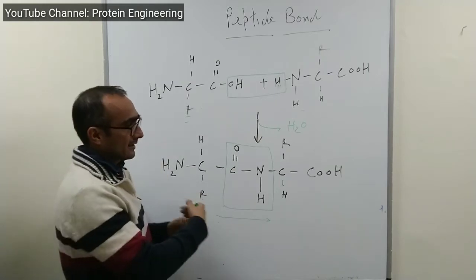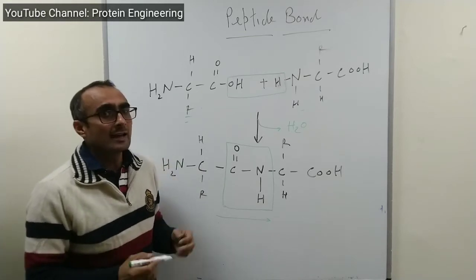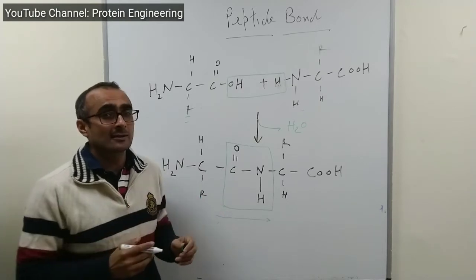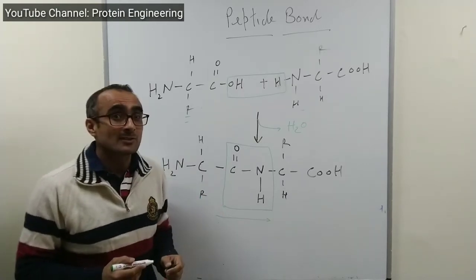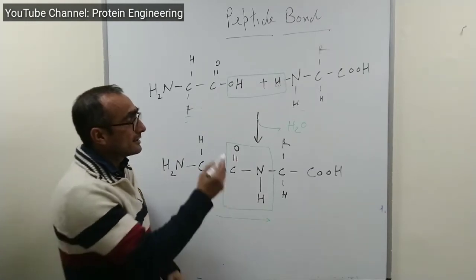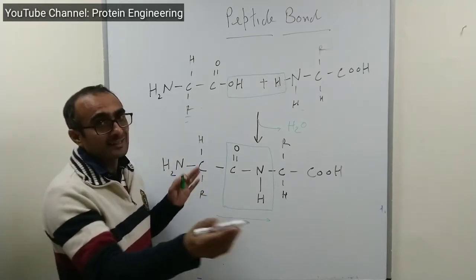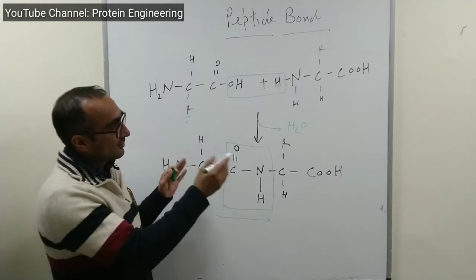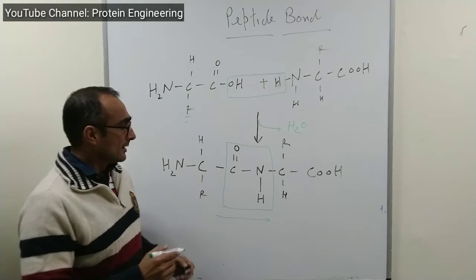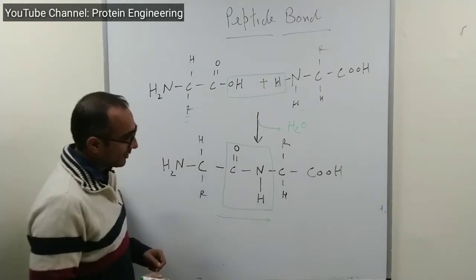Similarly, if you have a 100 amino acid long polypeptide or protein, you will have one fewer peptide bonds than amino acids — meaning 99 peptide bonds. We know that each peptide bond results in the release of one water molecule, equal to 18 daltons, so the mass of the polypeptide will be accordingly less than the sum of its constituent amino acids.